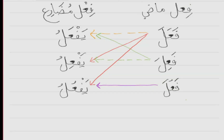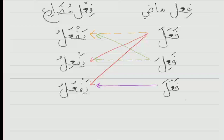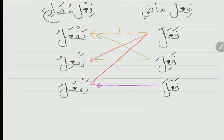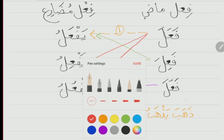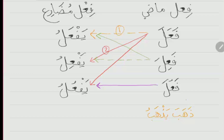It was not heard from the Arabs that they would say fa'ala yaf'alu or fa'ala yaf'alu. So, examples: Number one, fa'ala yaf'alu — like dhahaba yadhabu, to go. Dhahaba: he went; yadhabu: he goes or he will go. Also sa'ala yaf'alu and mana'a yamna'u. Number two, fa'ala yaf'ilu — like dharaba yadribu. Dharaba: he hit; yadribu: he hits or he will hit.